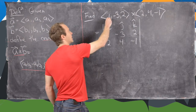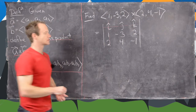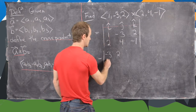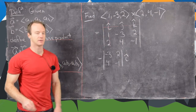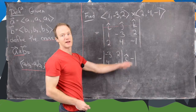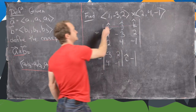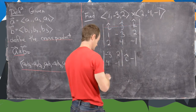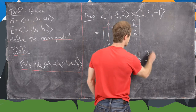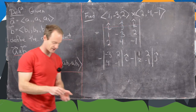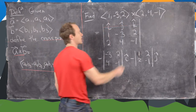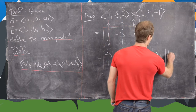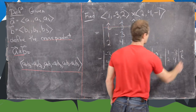Crossing out the first column and first row, we get the determinant of [−3, 2; 4, −1] in the i direction. Then we subtract the determinant of [1, 2; 2, −1] in the j direction. Finally, we add the determinant of [1, −3; 2, 4] in the k direction.